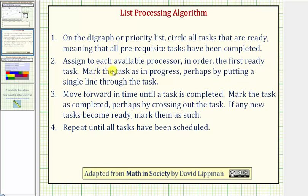Step two, we assign to each available processor in order the first ready task, and we mark the task as in progress. And then step three, we move forward in time until a task is completed. We mark the task as completed. And then if any new tasks become ready, we mark them as ready. Step four, repeat until all tasks have been scheduled.